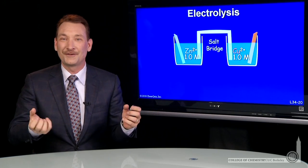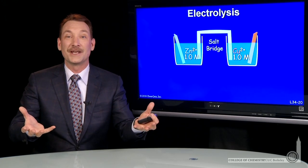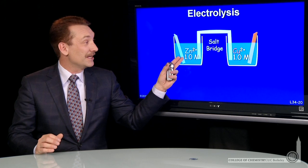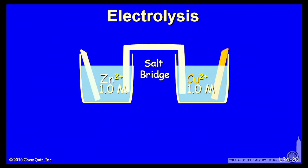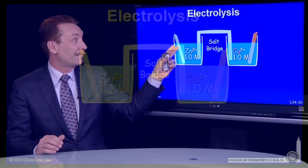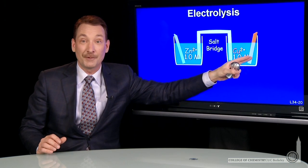In a galvanic cell, electrons flow from high potential to low potential. We saw in the zinc-copper galvanic cell the spontaneous direction for electrons to flow from the zinc to the copper electrode.